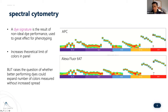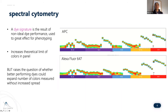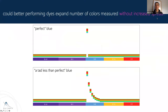This raises a question that's been bothering us: what if you had better performing dyes and could run them leveraging this instrument? Could you do quite a bit more? One thing we think about is, instead of dye signatures that we have the ability to deconvolute, what would a perfect dye actually be? Using the Aurora as an example, a perfect label would hit only about a 10 nanometer band pass, be narrowly excited, incredibly narrowly emitting, with zero spread contribution and no secondary fluorescence.